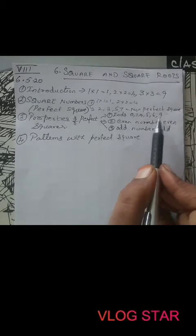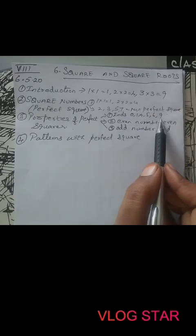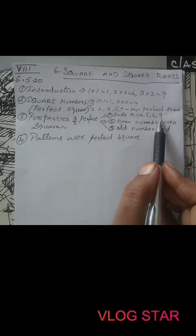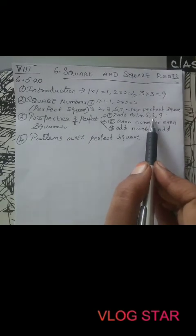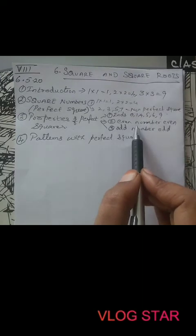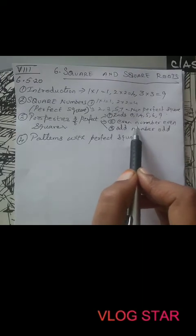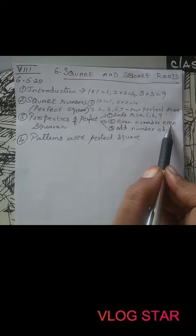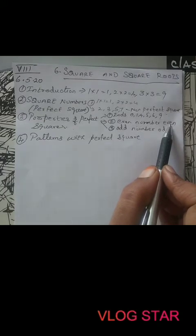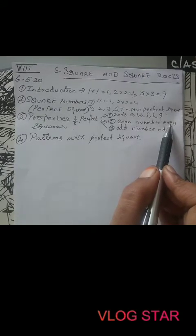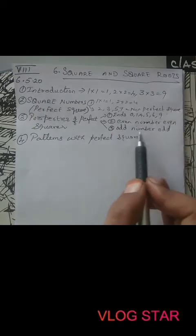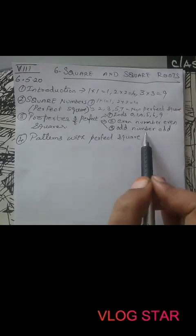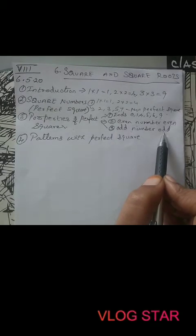Only these digits will appear in the units place, so when you see the units digit itself, you can identify whether it may or may not be a perfect square. Second property: all perfect squares of even numbers are even — for example, 2 squared is 4, 6 squared is 36. And all perfect squares of odd numbers are odd. These three properties we learned in the last class.